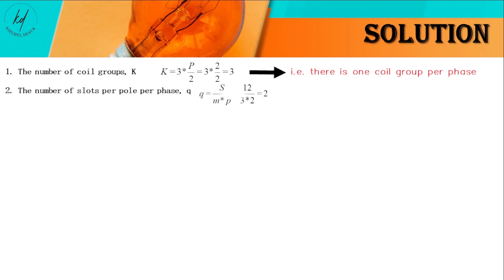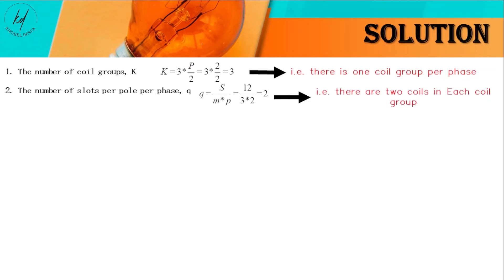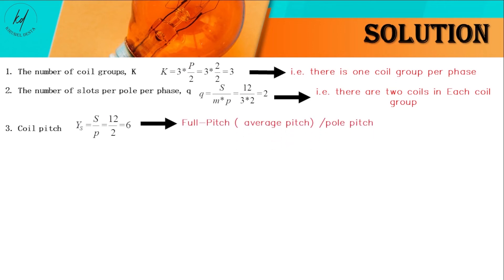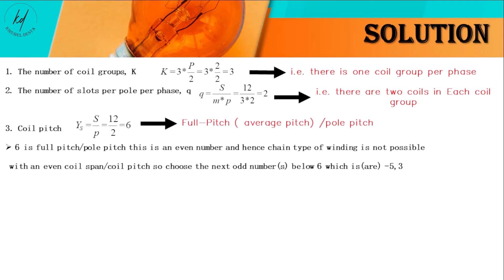Second, the number of slots per pole per phase, represented by the letter Q, which gives us 2. That means there are 2 coils in each coil group — hence phases A, B, and C respectively have 2 coils each. As a result, 2 multiplied by 3 phases equals 6, so the total number of coils equals half the number of slots, due to a single-layer winding type.